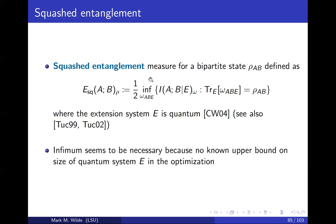For mathematical reasons, it's not clear that we can replace this infimum with a minimum. Many times you can do that in applications, but here it seems necessary because no one knows how to place an upper bound on the dimension of the eavesdropper system in the optimization. This quantity is likely difficult to compute — it has been proven NP-hard to compute, and it might even be uncomputable. But that's not really a problem because the main use of squashed entanglement is as a bound on distillable entanglement or a bound on distillable secret key in quantum cryptography. As long as you can pick a clever extension state, you can get a good bound.